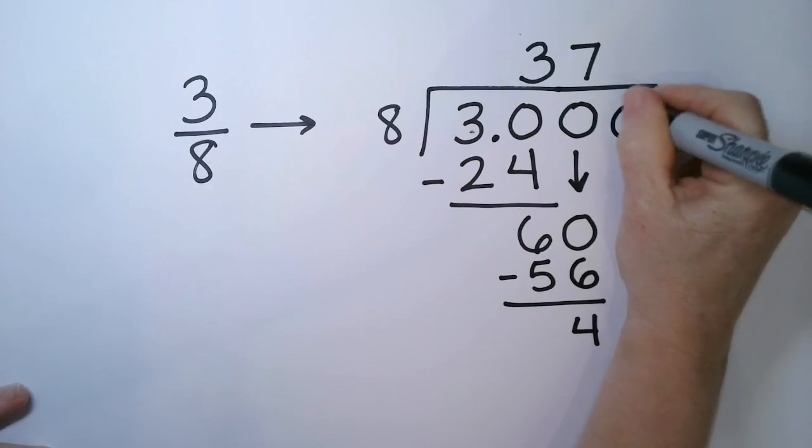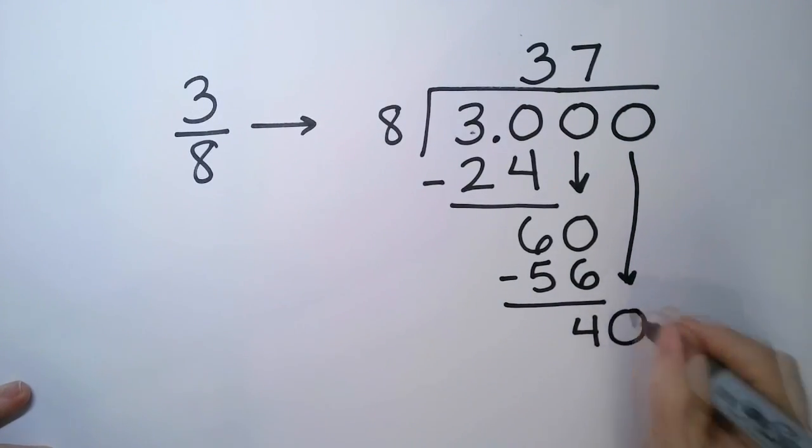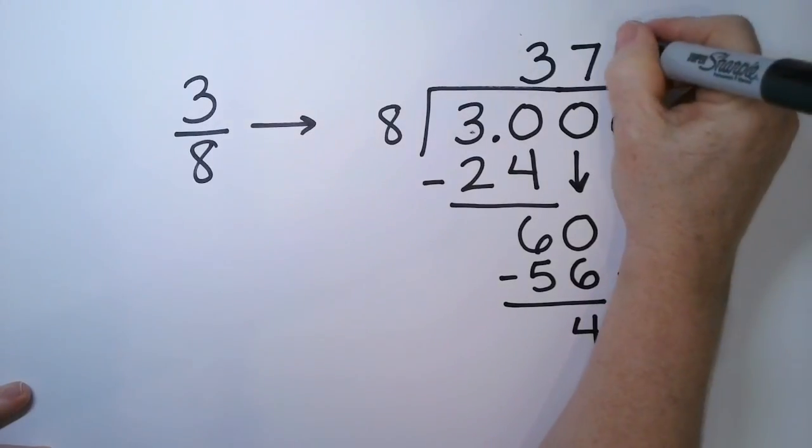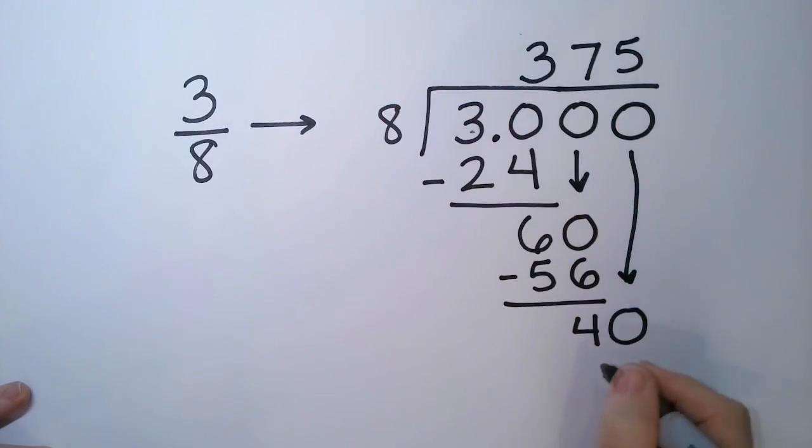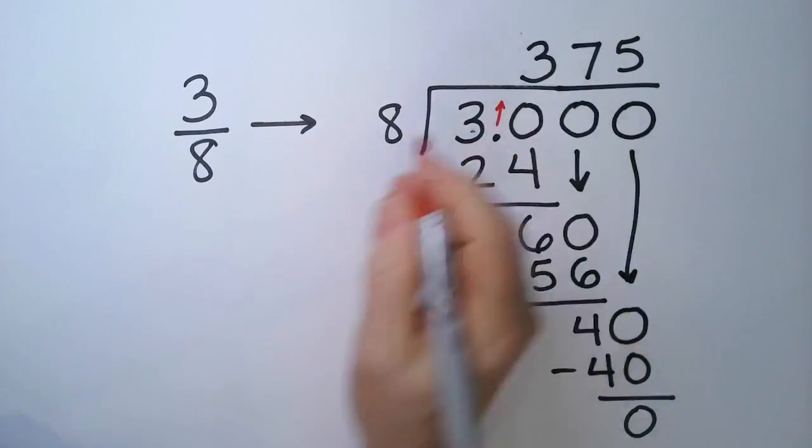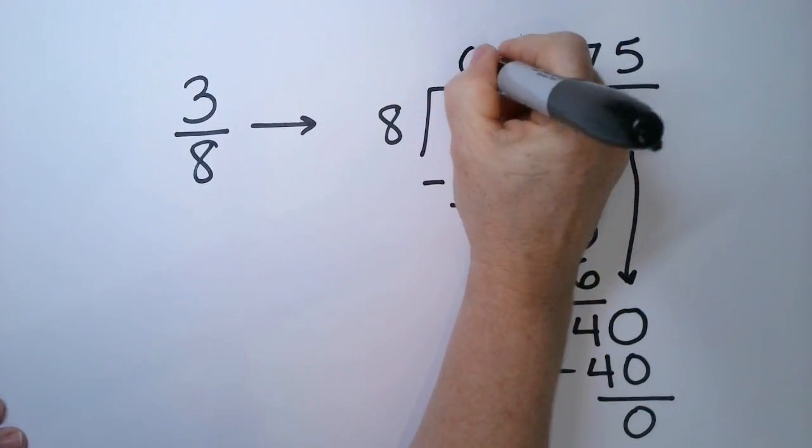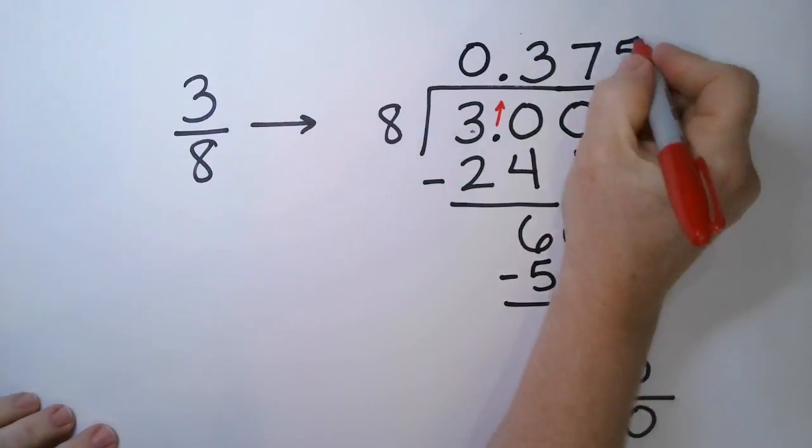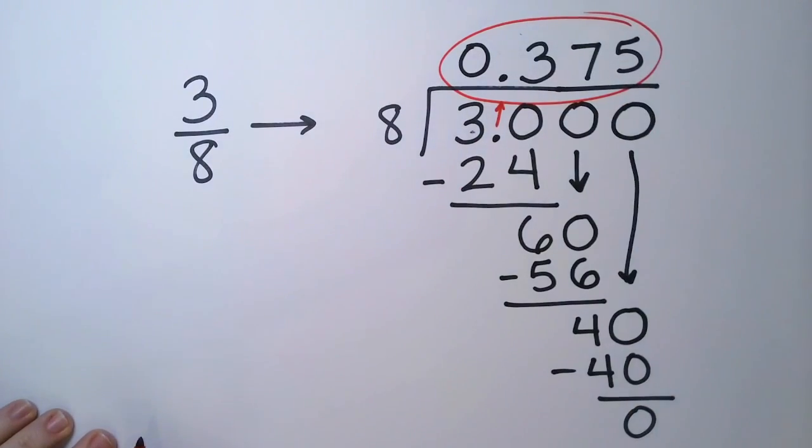I'm going to add another 0. Drop that down. 8 goes into 40 evenly. 5 times 8 is 40. And we're almost done. We just need to push up that decimal point here. And my final answer is 0.375.